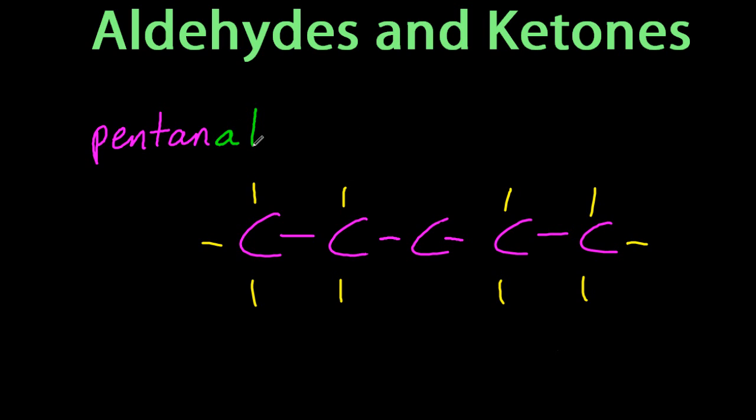And if I put the double bond O at the end, it becomes an aldehyde. And looking at the condensed structural formula of that, it's CHO. That's how they like you to write the aldehyde. CHO.